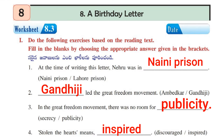Let's move on to worksheet number 8.3. Here fill in the blanks is given and we have given options also. By reading the sentence, we have to pick and write the correct option in the blank. First one: At the time of writing this letter, Nehru was in dash — prison. Second one: Dash led the great freedom movement — Gandhiji. Third one: In the great freedom movement, there was no room for dash — publicity. Fourth one: Stolen the hearts means dash — inspired.